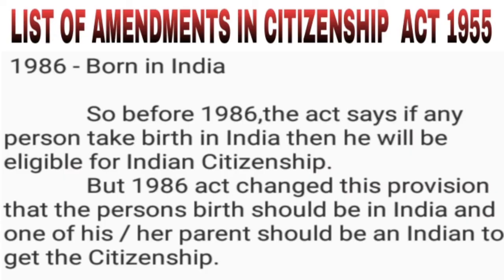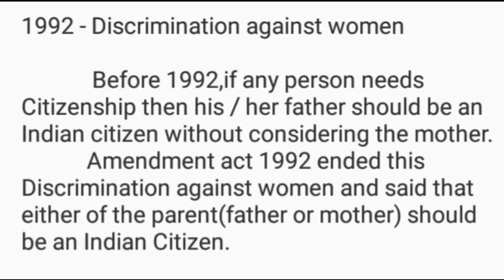The first amendment to the Citizenship Act was in 1986 with respect to persons born in India. Before 1986, if any person was born in India, they were eligible for Indian citizenship. The 1986 Amendment Act changed this provision: the person's birth should be in India and one of their parents should be an Indian to get citizenship. The Citizenship Amendment Act 1992 addressed discrimination against women. Before 1992, a person's father had to be an Indian citizen, without considering the mother. The 1992 Amendment ended this discrimination, stating that either parent — father or mother — should be an Indian citizen.